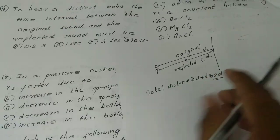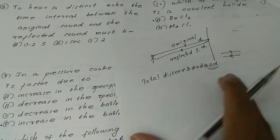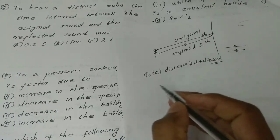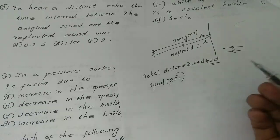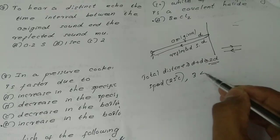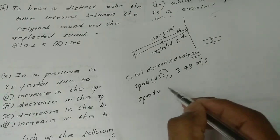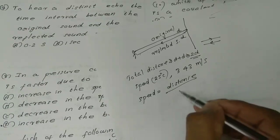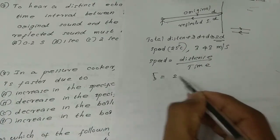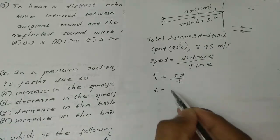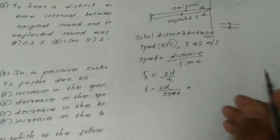The ideal condition is 25 degrees Celsius, where the speed of sound is 340 m/s (approximately 3.4 × 10² m/s). Using the formula: speed = distance / time, so time = 2d / speed.